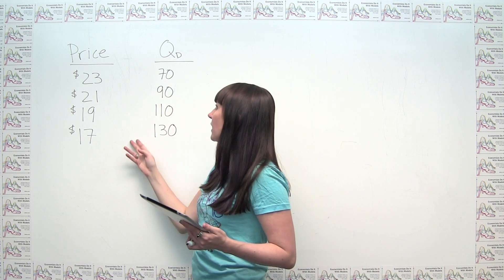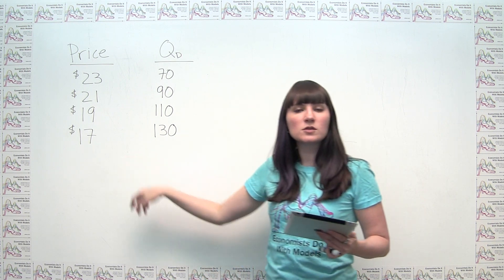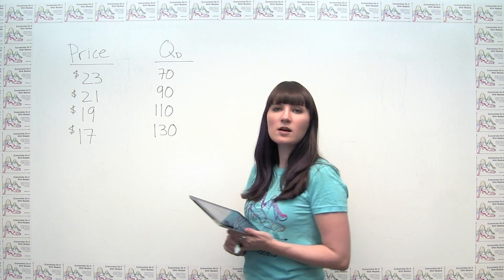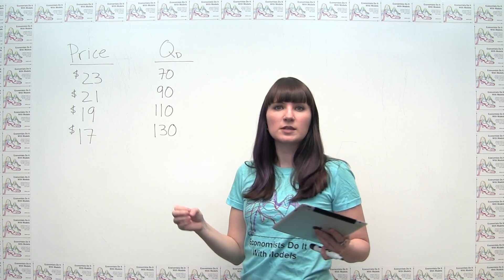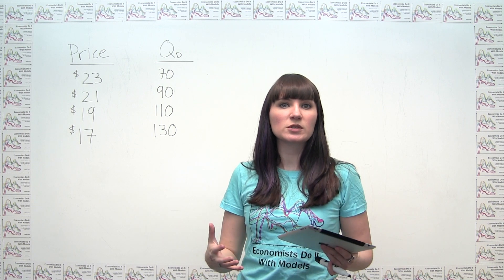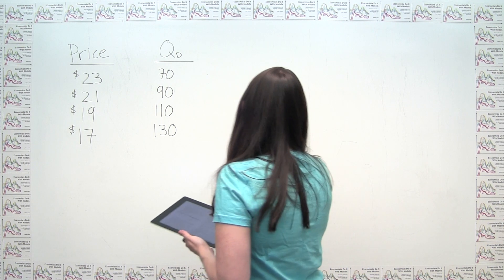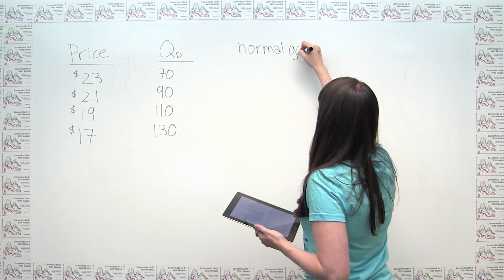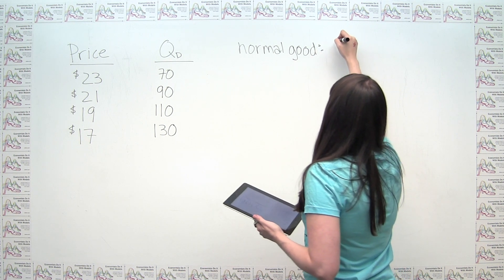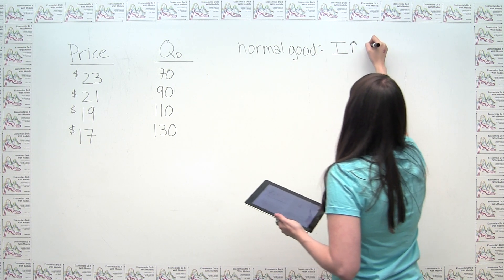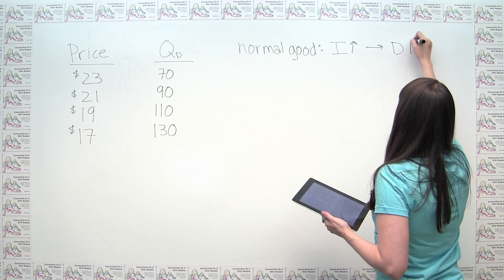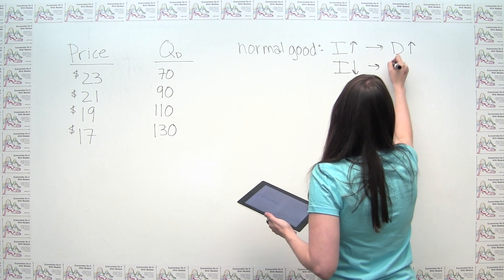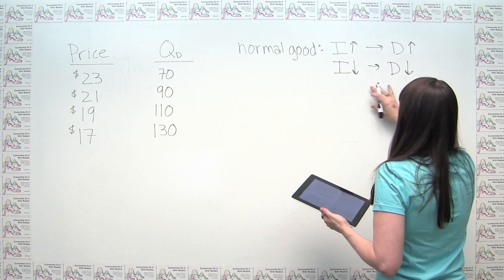And we were told that we were looking at a normal good, so it's worth reviewing what a normal good is. When we talk about normal goods, what we're actually referring to is how the good behaves in response to changes in consumers' income. And we can say that if we have a normal good, these are the goods that we usually tend to think about, that when consumers' income goes up, the demand for those goods goes up. And conversely, when consumers' income goes down, the demand for those goods goes down.